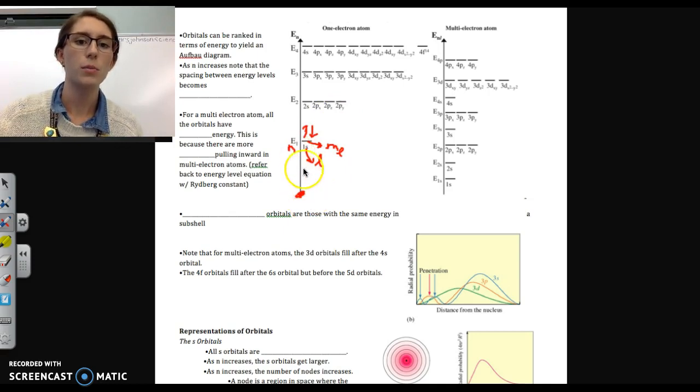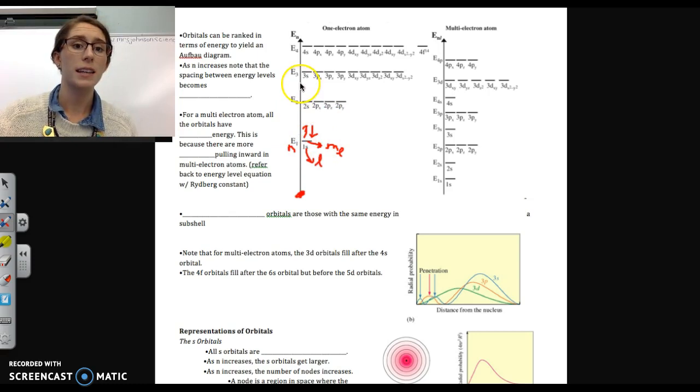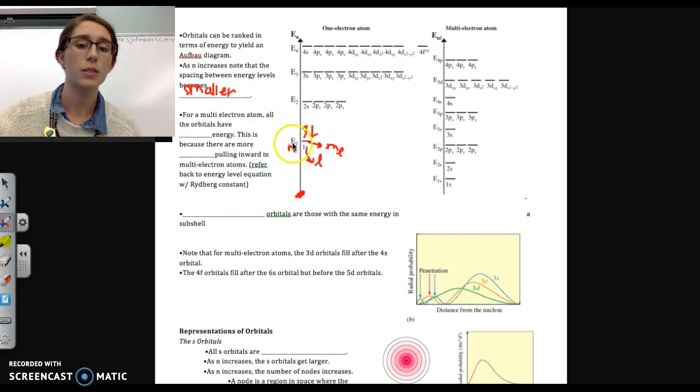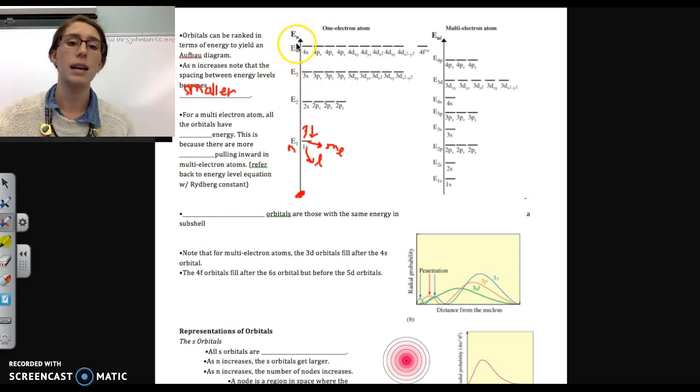The one thing to notice is that as we move away from the nucleus, the spacing here between these energy levels, it becomes smaller. And that's actually representing a decrease in the energy between these different energy levels. So there's a big energy difference between level 1 and 2, and the difference becomes less as we go on. That's just for a one electron atom, though.